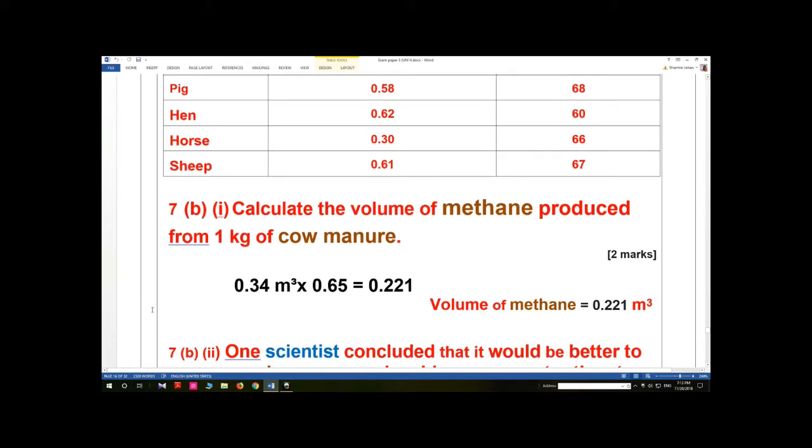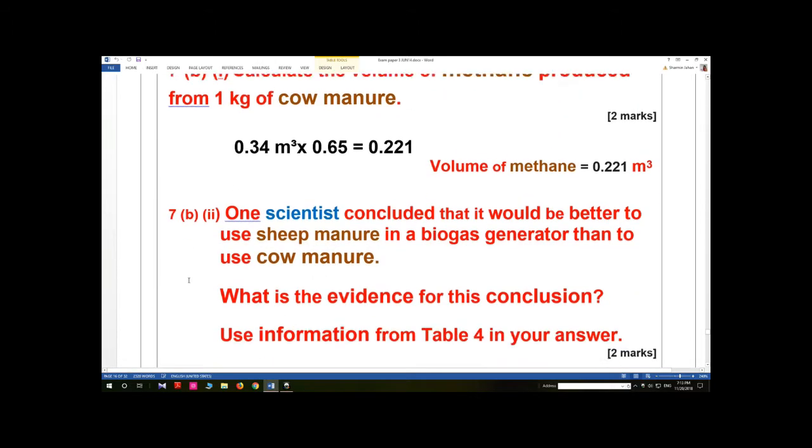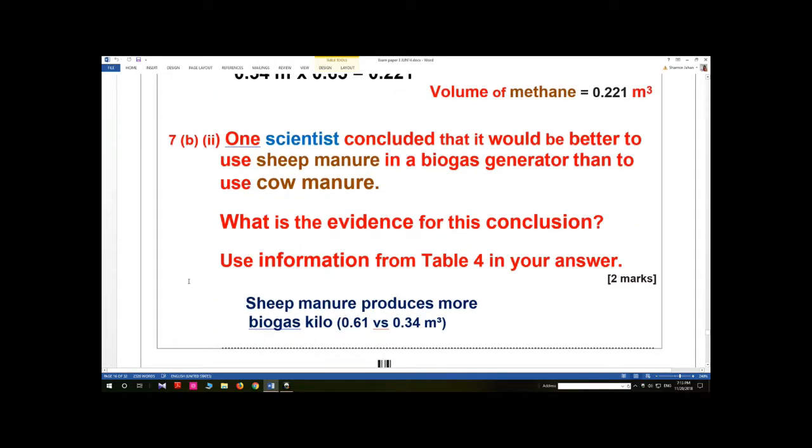Question 7(b)(ii): One scientist concluded that it would be better to use sheep manure in a biogas generator than to use cow manure. What is the evidence for this conclusion? Use information from Table 4 in your answer.